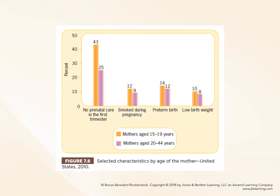Here we have selected characteristics by age of the mother in the United States for 2010. In orange we have mothers aged 15 to 19 years old, and in pink mothers aged 20 to 44 years old. Teen pregnancies were more likely to have no prenatal care in the first trimester — the most critical time of development. 43% of teen mothers did not get prenatal care in the first trimester, 12% smoked, 14% had a preterm birth, and 10% had a low birth weight baby.